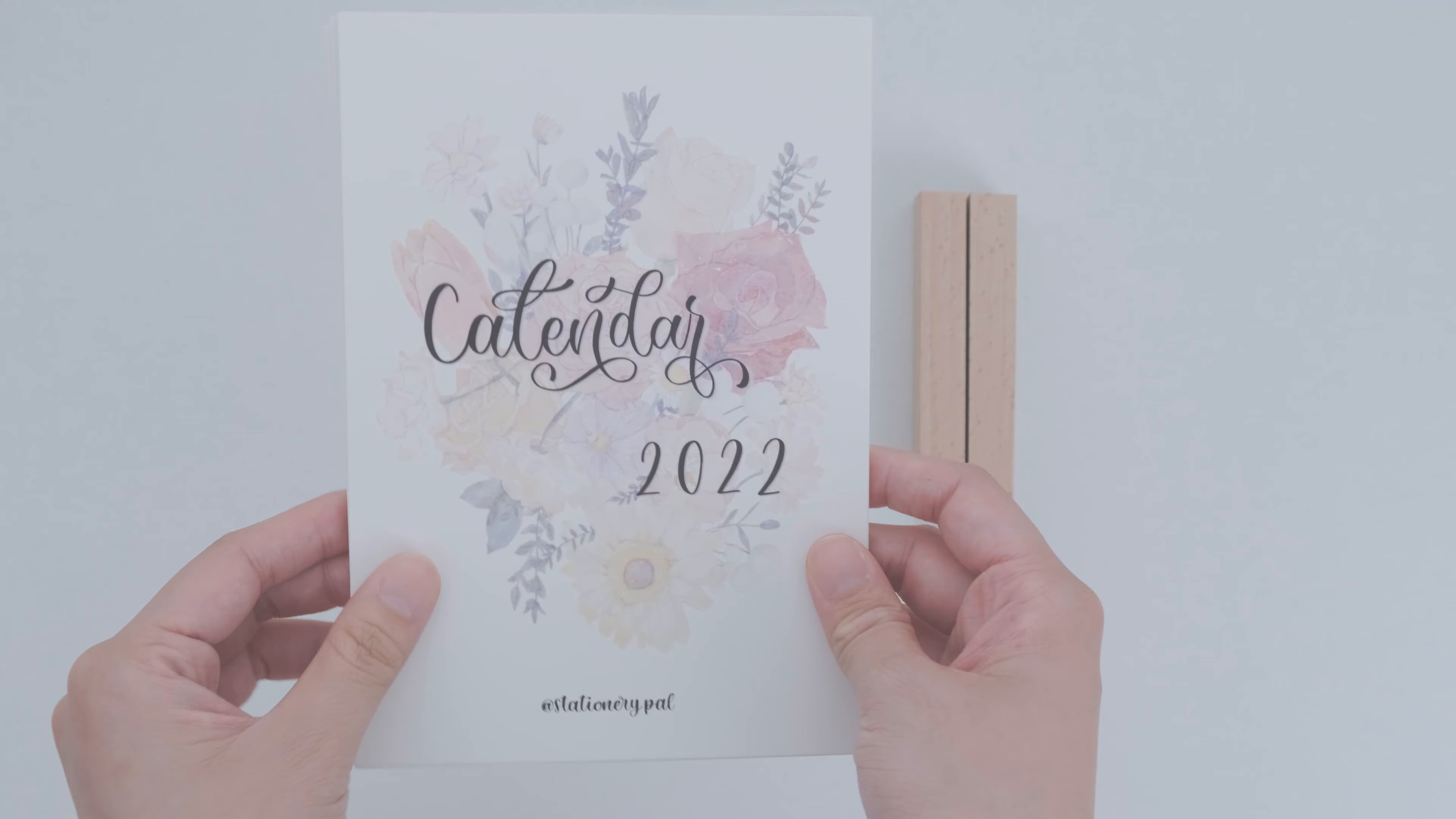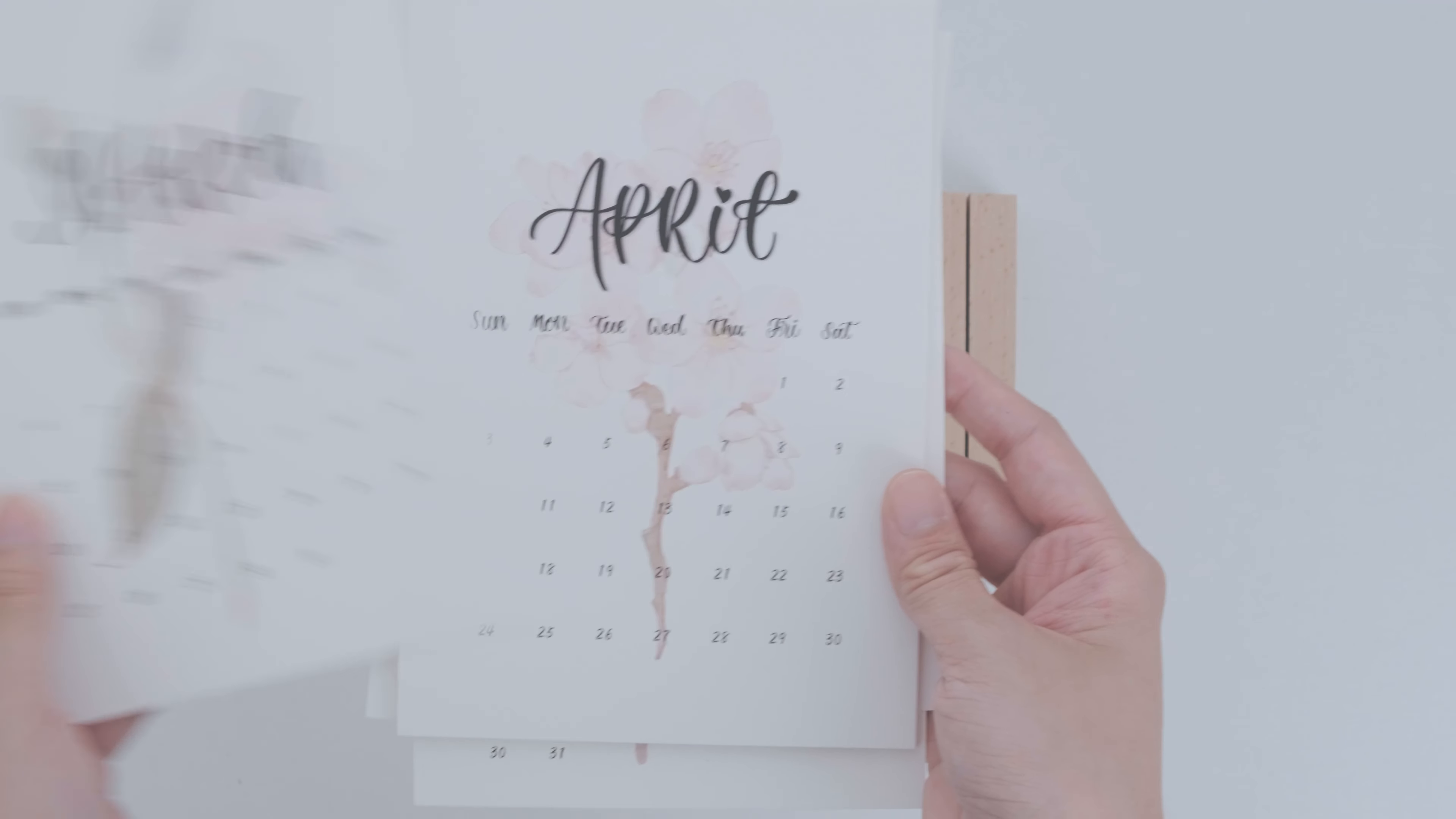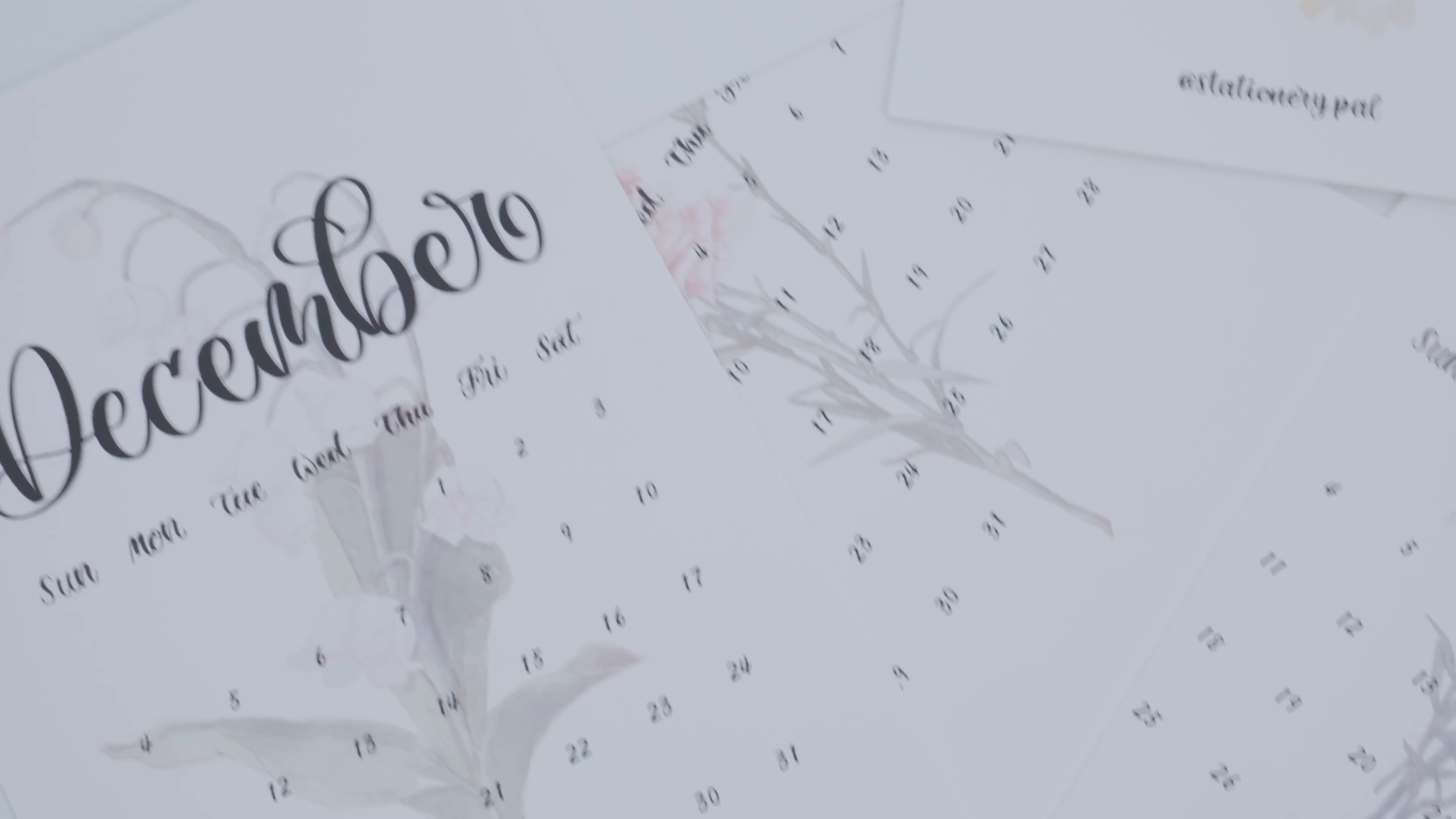She started the project One Flower a Day to track her expression of emotion at the beginning of 2021. The more she painted, the more she began to think deeply about the relationship between flowers and life. We selected 12 of her favorite flowers for the 2022 calendar. The tone of these flowers is warm and healing. We hope our calendar will bring you peace of mind.